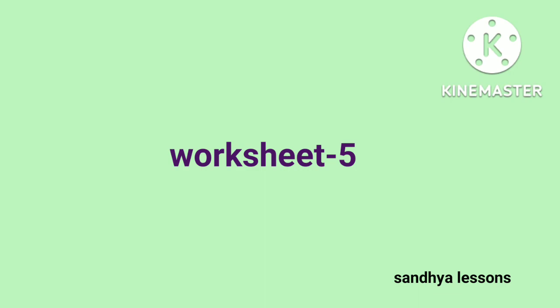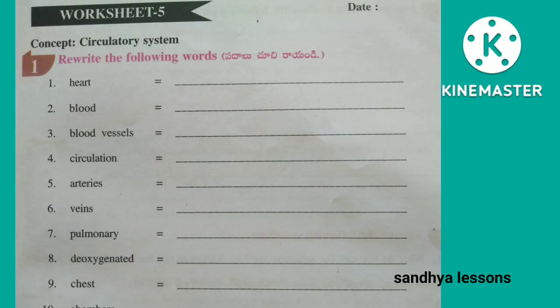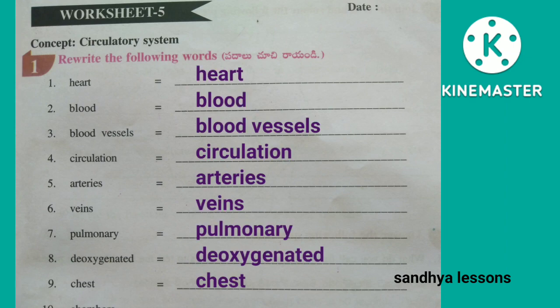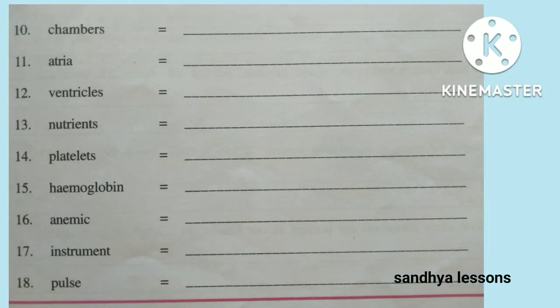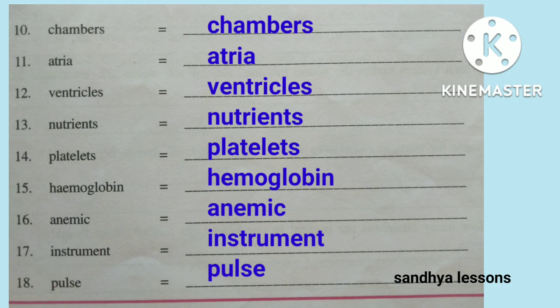Worksheet 5. First, rewrite the following words: heart, blood, blood vessels, circulation, arteries, veins, pulmonary, deoxygenated, chest, chambers, atria, ventricles, nutrients, platelets, hemoglobin, anemic, instrument, pulse.